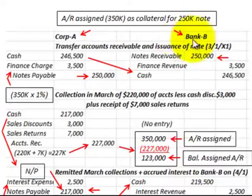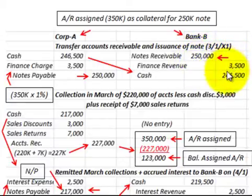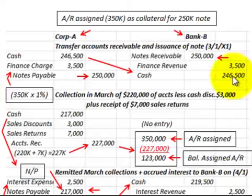For Bank B, they record a notes receivable of $250,000 and finance revenue of $3,500. The cash they paid out was $246,500.